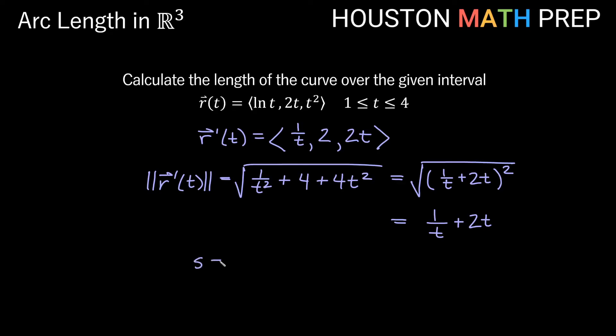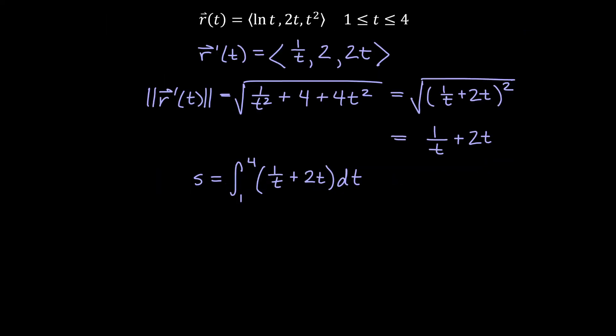Okay, so let's go ahead and do our arc length then. Our arc length will be the integral from 1 to 4. And we got the function. Notice this is not a vector anymore, because we found the magnitude 1 over t plus 2t. We'll integrate that dt. We'll go ahead and do the integral. So the antiderivative of 1 over t with respect to t is going to be ln of t plus the antiderivative of 2t is going to be t squared.